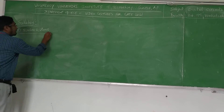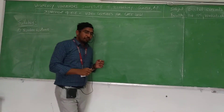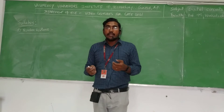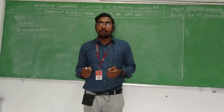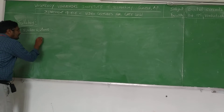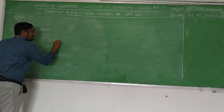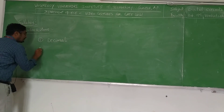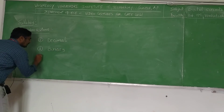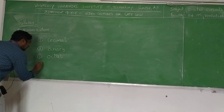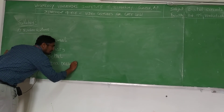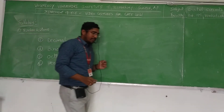The first topic is number systems. As I said, we use numbers in our daily life — to count, to specify, and to call a particular person. The four number systems we are going to learn are: Decimal, Binary, Octal, and Hexadecimal. To define any number system, we need two things: base and range.